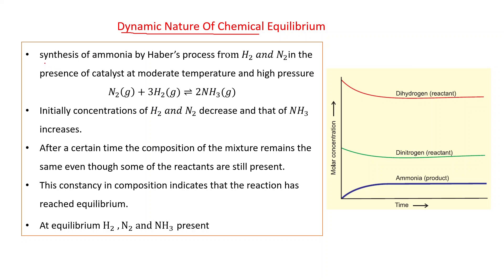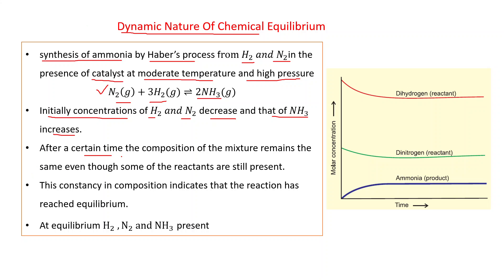We will consider the synthesis of ammonia by Haber's process to illustrate chemical equilibrium. In Haber's process, ammonia is formed from H₂ and N₂ in the presence of a catalyst at moderate temperature and high pressure. The reaction is: N₂ + 3H₂ ⇌ 2NH₃. Initially, concentrations of H₂ and N₂ decrease and concentration of NH₃ increases. After a certain time, the composition of the mixture remains the same even though some reactants are still present, indicating that equilibrium has been reached.